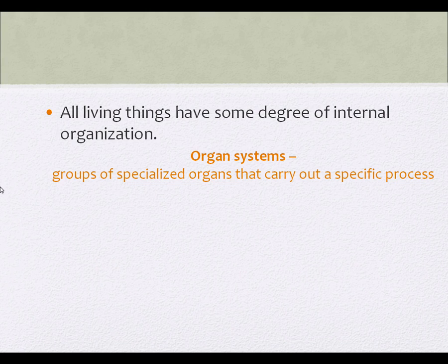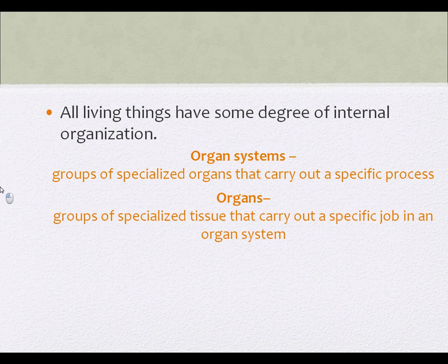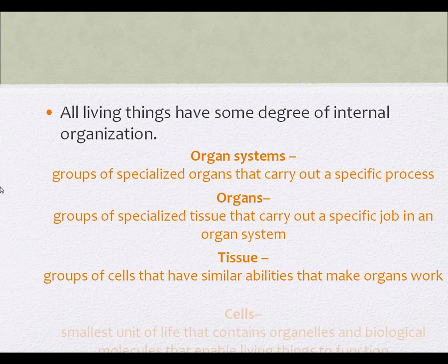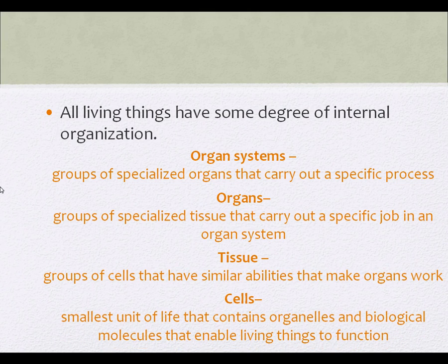In most multicellular organisms, you're going to have organ systems, organs, tissue, and then cells. This is the basic hierarchy, and this seems like common sense, but it may actually show up as simple as it is. Cells are the smallest unit of life. Cells bind together to form tissues. Tissues come together to form organs. Organs come together to form organ systems.